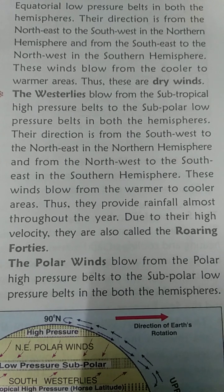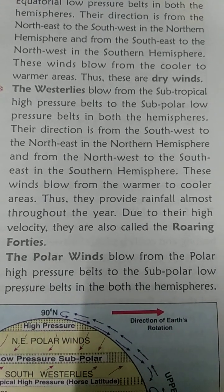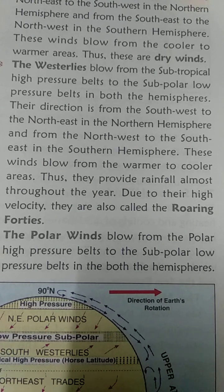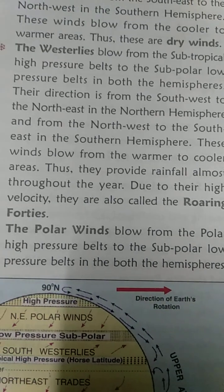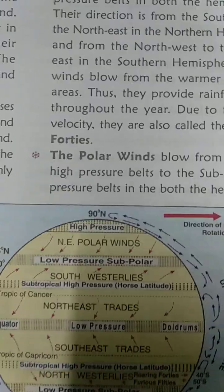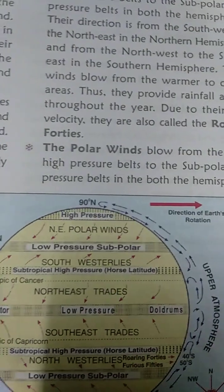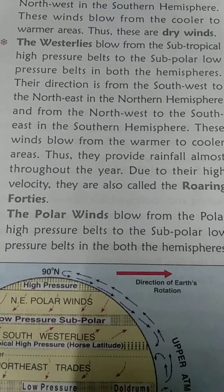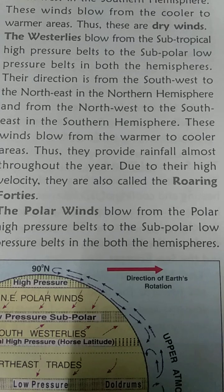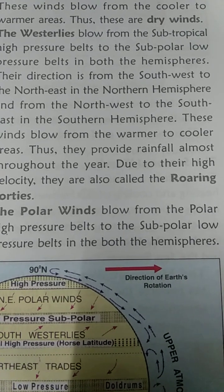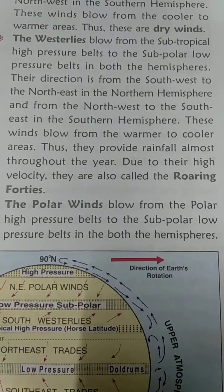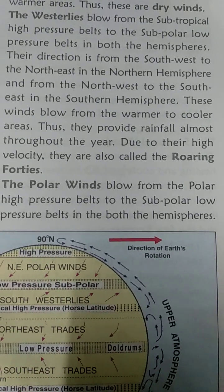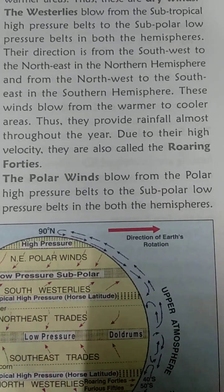Westerlies blow from subtropical high pressure zones to the subpolar low pressure zones in both hemispheres. Their direction is from the southwest to the northeast in the northern hemisphere and from the northwest to the southeast in the southern hemisphere. These winds blow from warmer to cooler areas, and thus they provide rain for almost the entire year. Due to their high velocity, they are known as roaring forties.